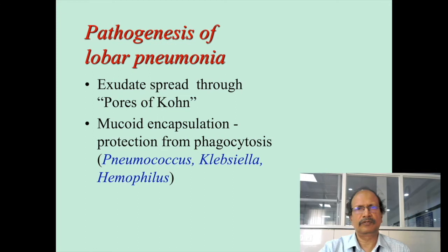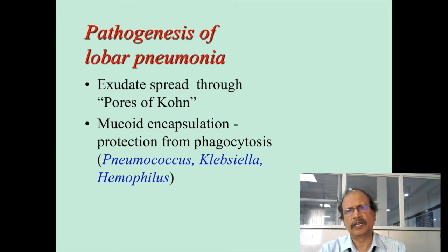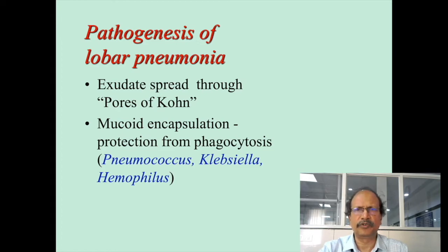Looking at the pathogenesis of lobar pneumonia, it is mainly caused by organisms that have mucoid encapsulation. The organisms with mucoid encapsulation include Streptococcus pneumoniae, Klebsiella, and Haemophilus, and these are the ones commonly associated with the production of the lobar variety of pneumonia.